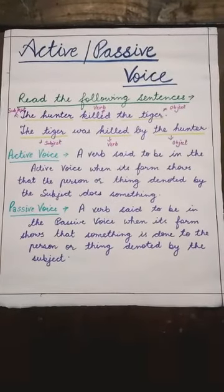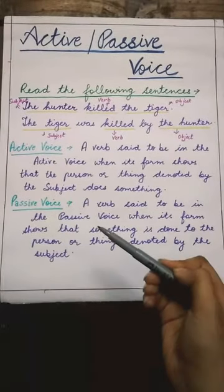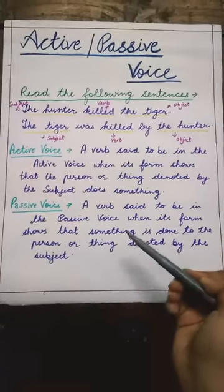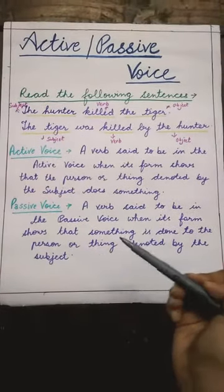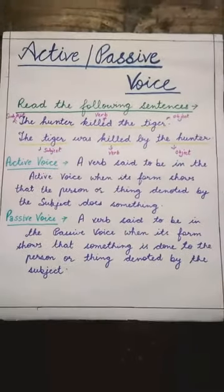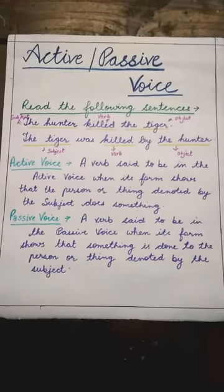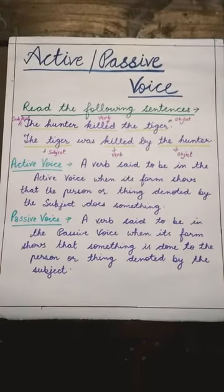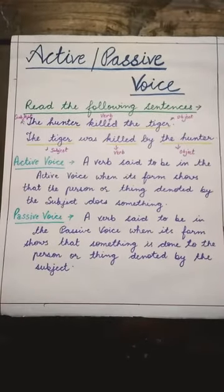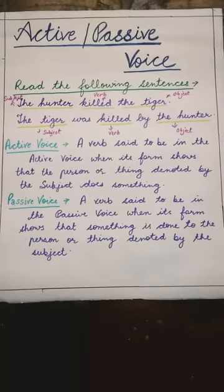Now let's read about what is passive voice. A verb is said to be in the passive voice when its form shows that something is done to the person or thing denoted by the subject. It means verb को passive voice में तब माना जाता है जब उसकी form show करती है कि जो subject की place पे person और thing हैं उनके साथ कोई action perform हुआ है.